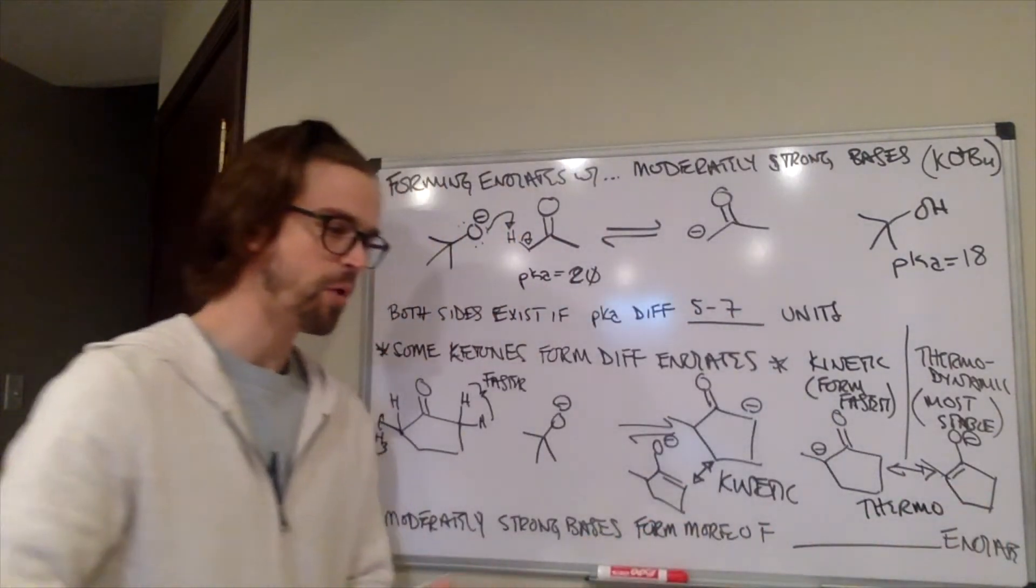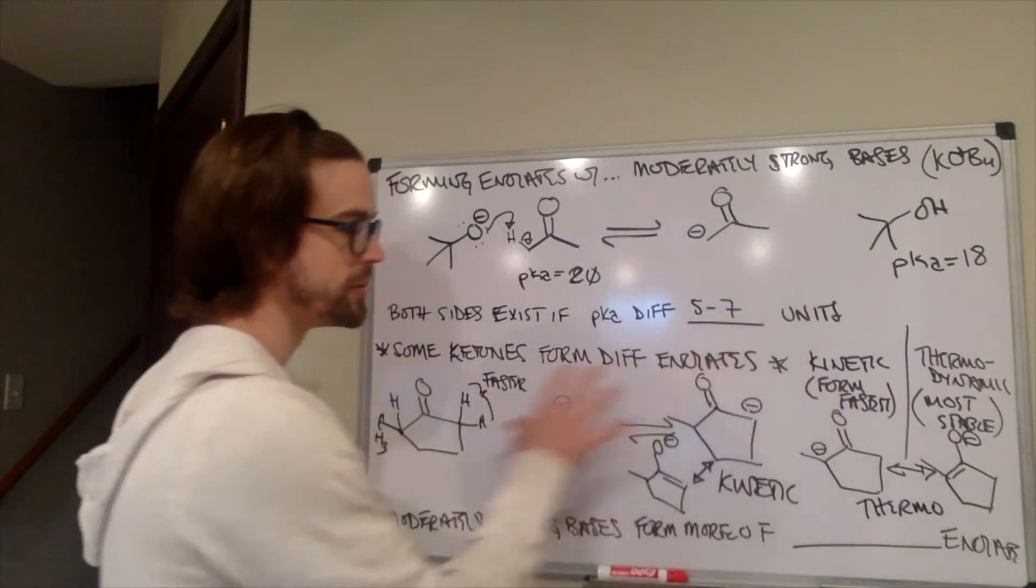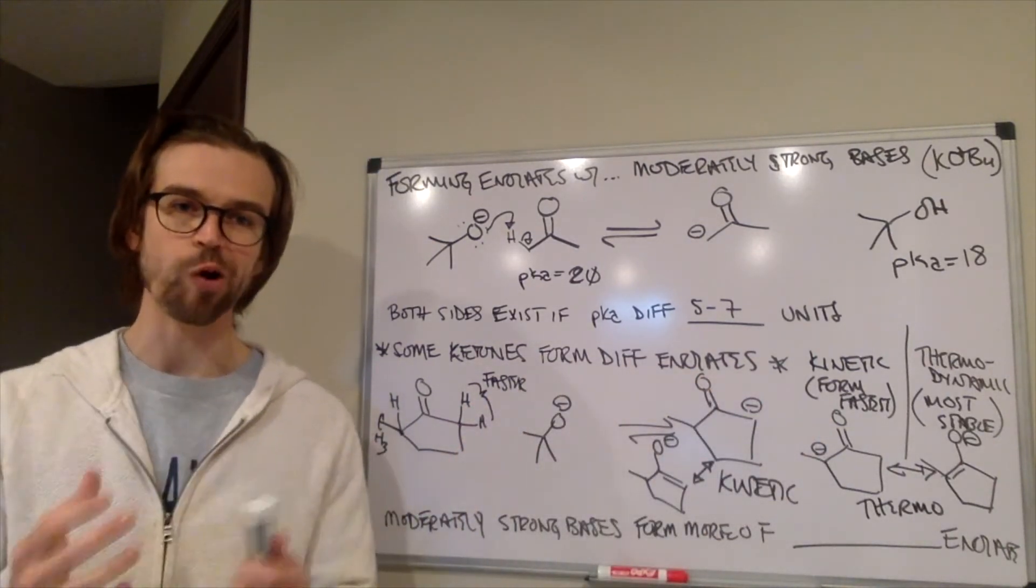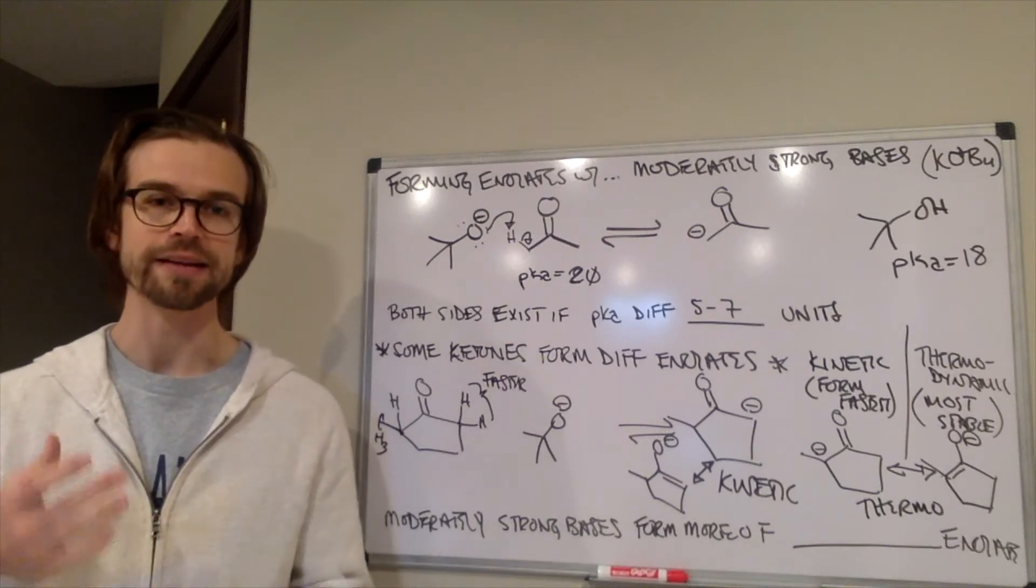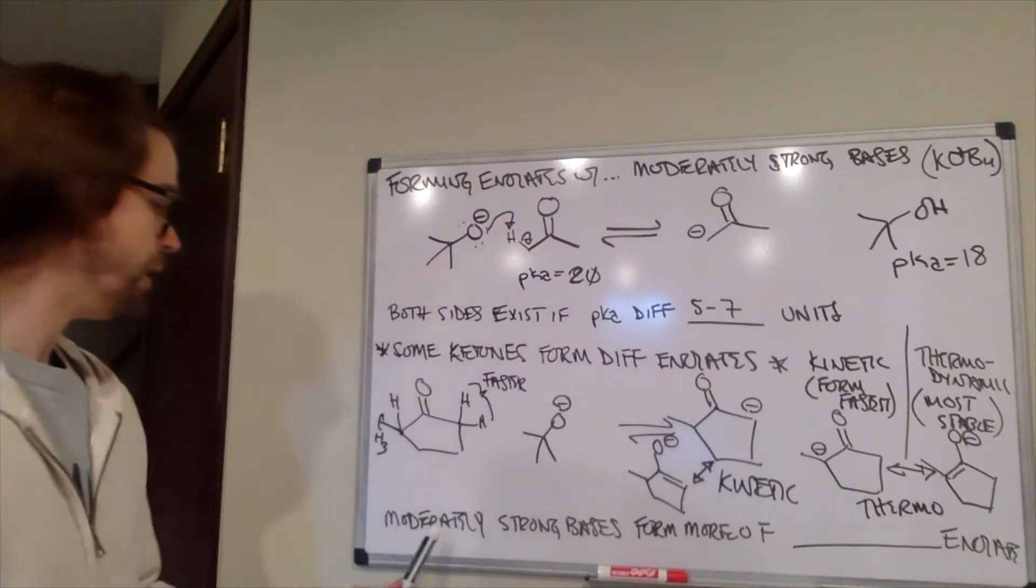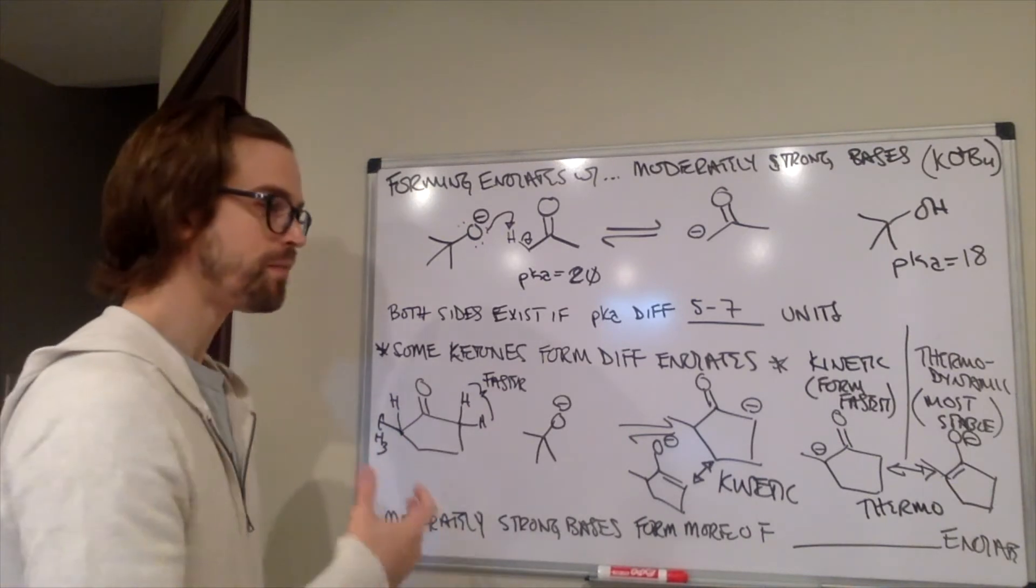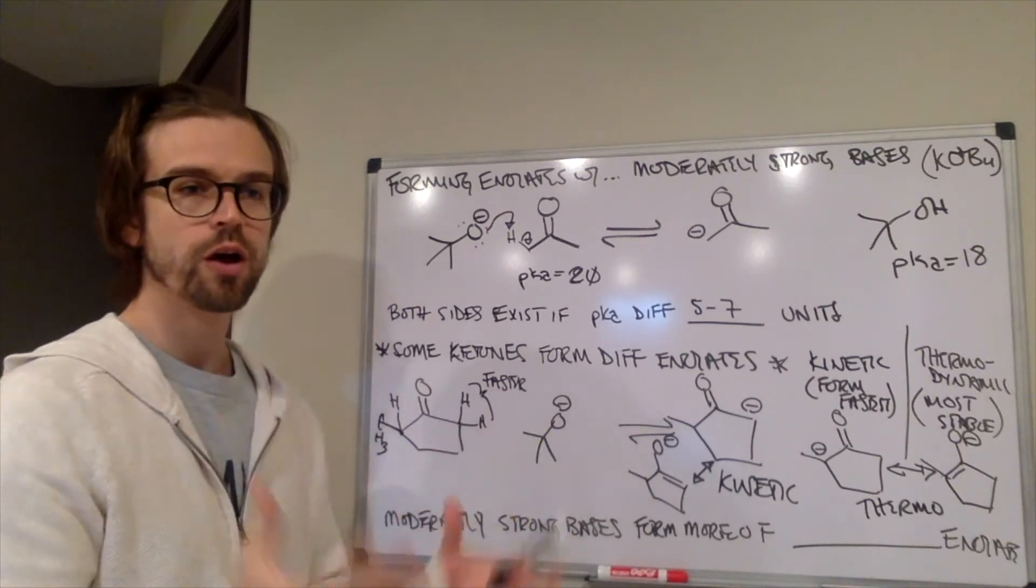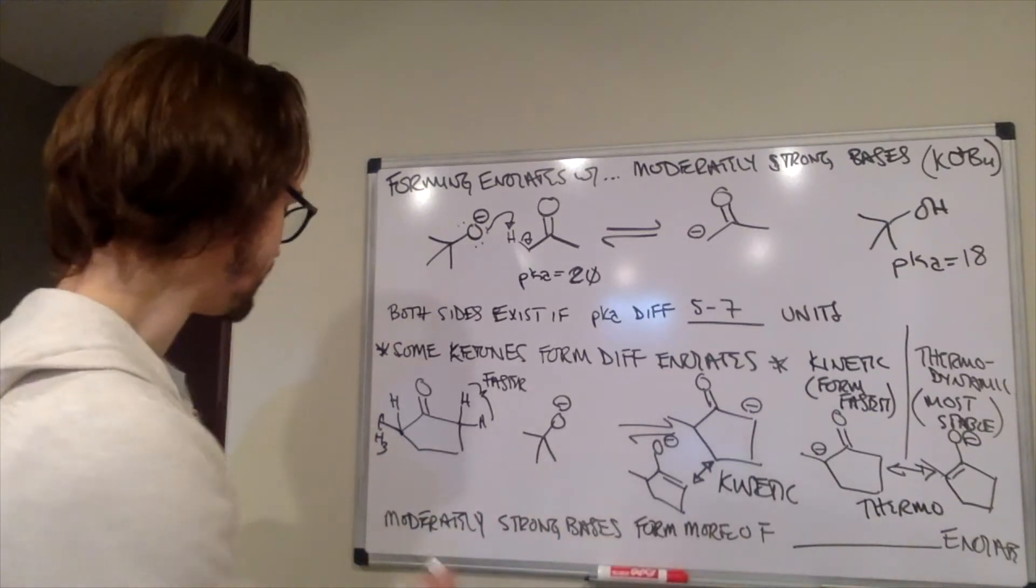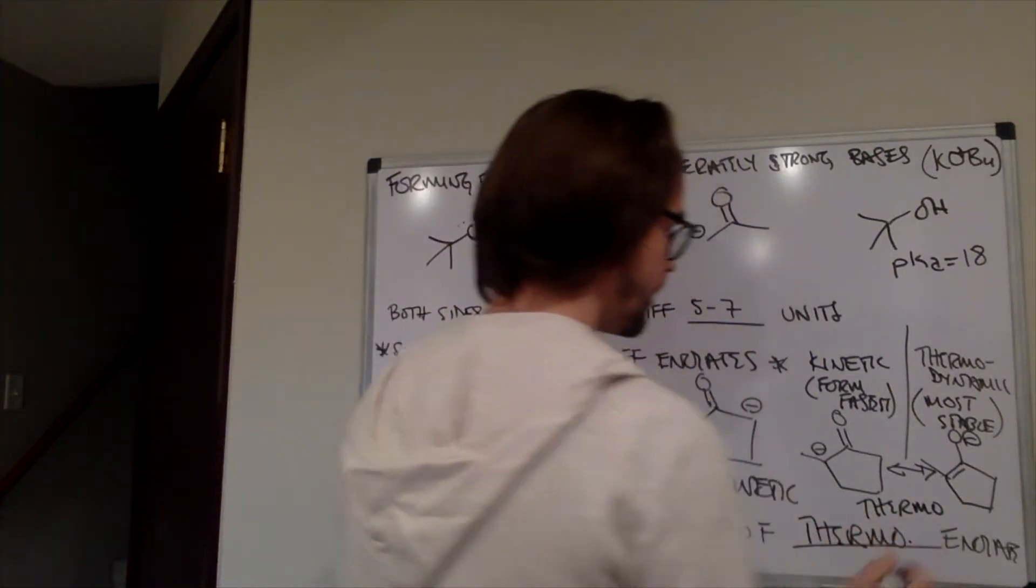And what did we say? I said it a moment ago about these moderately strong bases. Because the equilibrium is able to shift back and forth, back and forth, back and forth, over and over and over again, it is going to settle into the thing that is most stable. The most stable thing is that thermodynamic enolate. So, these moderately strong bases, while they might have deprotonated the easier position first, at some point it is going to go into the more favorable thermodynamic well of the more stable species. So, moderately strong bases form more of the thermodynamic enolate.